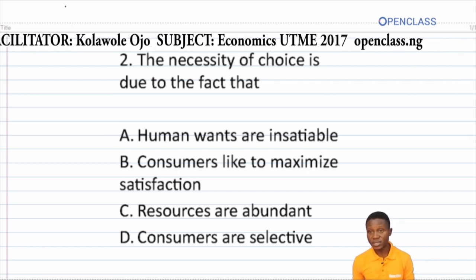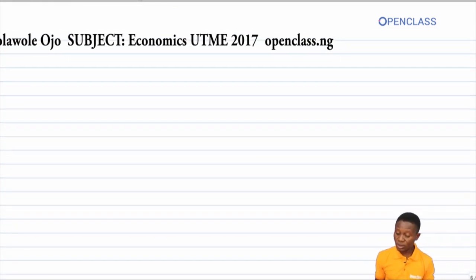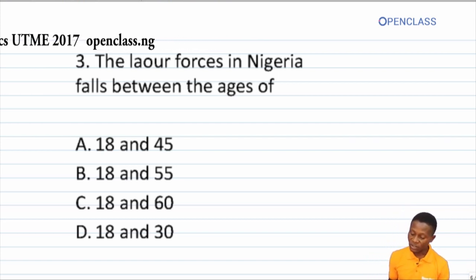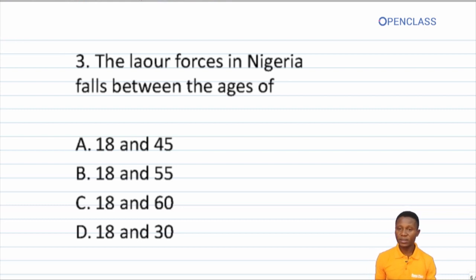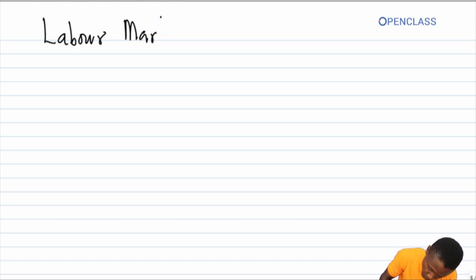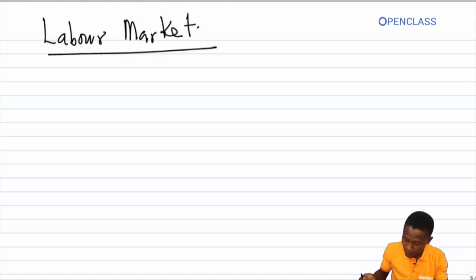The next question: the labor force in Nigeria falls between the ages of A) 18 and 45, B) 18 and 55, C) 18 and 60, then D) 18 and 30. This question was picked under the labor market topic. Now what is labor? All human efforts, be it mental or physical, that are directed towards the production of goods and services is referred to as labor.